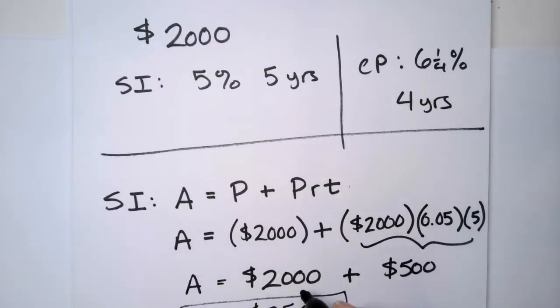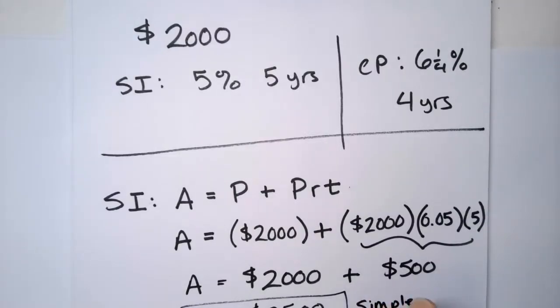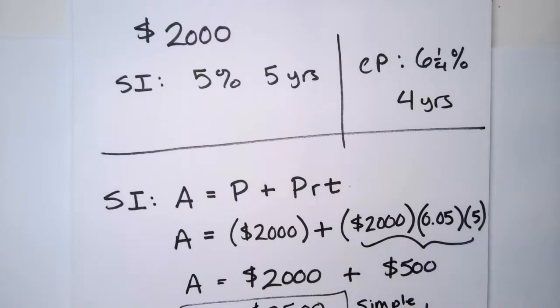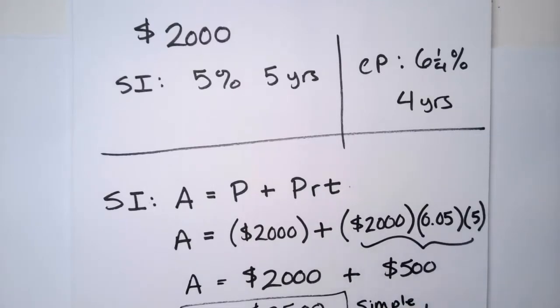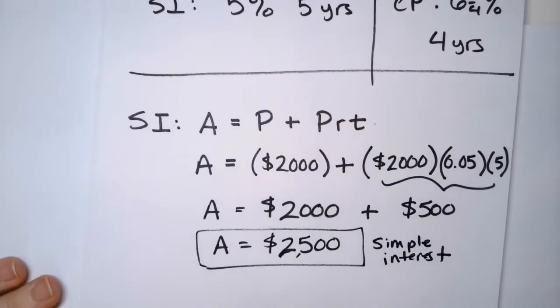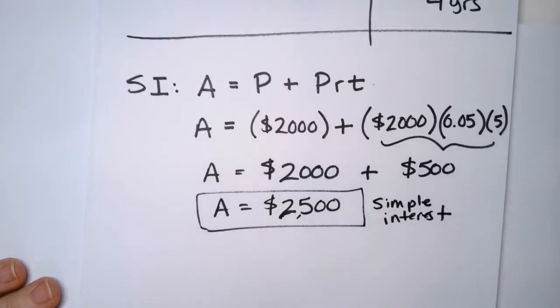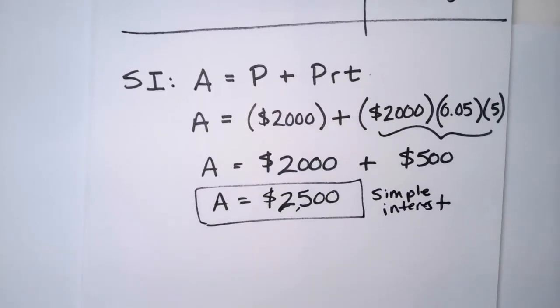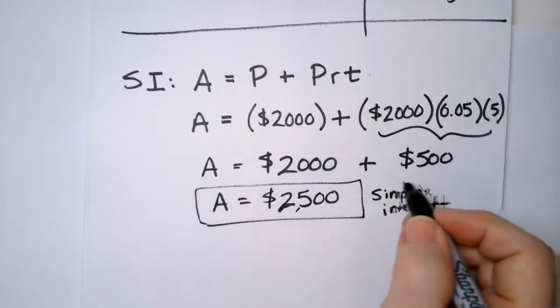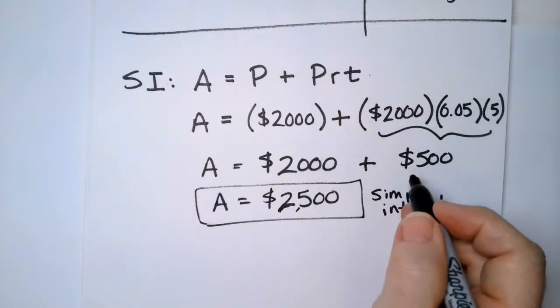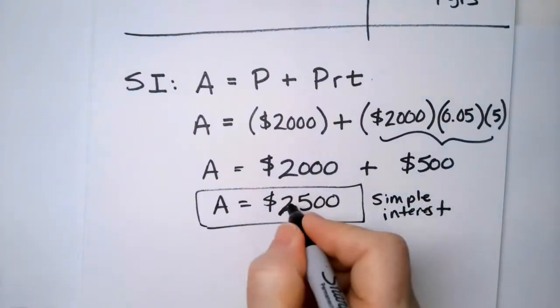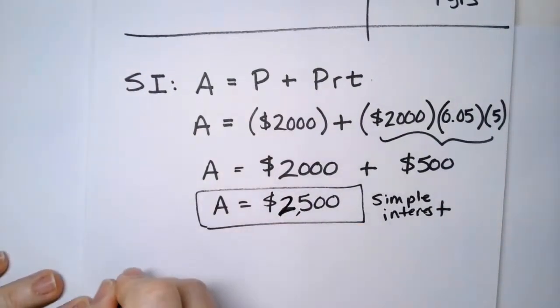So what we're doing is we're saying, why don't you take my 2,000? And by the way, I need it back. And I need it back in five years. And they're like, well, you know what? Interest is the cost of borrowing money. So this $500 is how much they're paying you for the privilege of using your 2,000. So let's do compound interest.